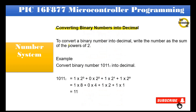Converting binary numbers into decimal: To convert a binary number into decimal, write the number as the sum of the powers of 2. Example — Convert binary number 1011 into decimal: 1011 = (1 × 2³) + (0 × 2²) + (1 × 2¹) + (1 × 2⁰) = (1 × 8) + (0 × 4) + (1 × 2) + (1 × 1) = 11. So binary number 1011 is equal to 11 in the decimal number system.